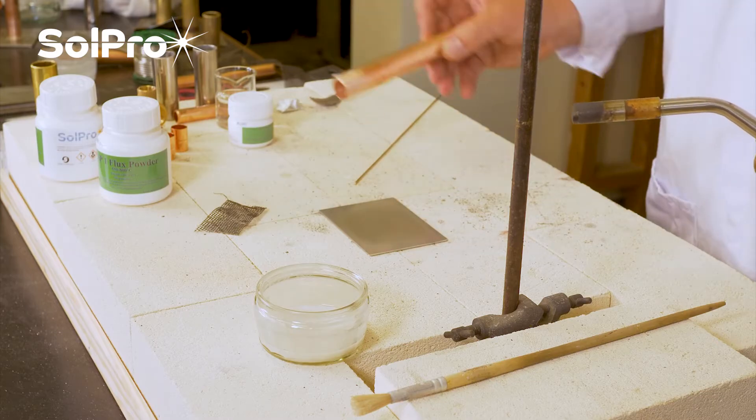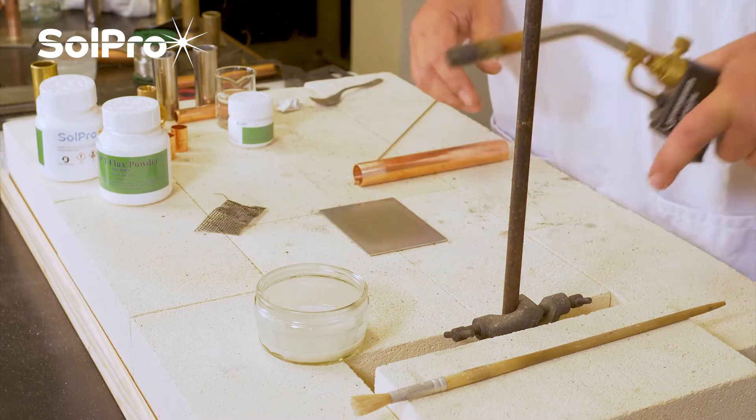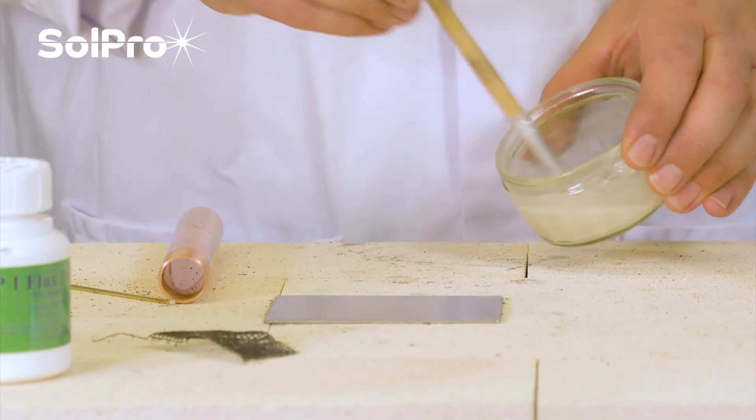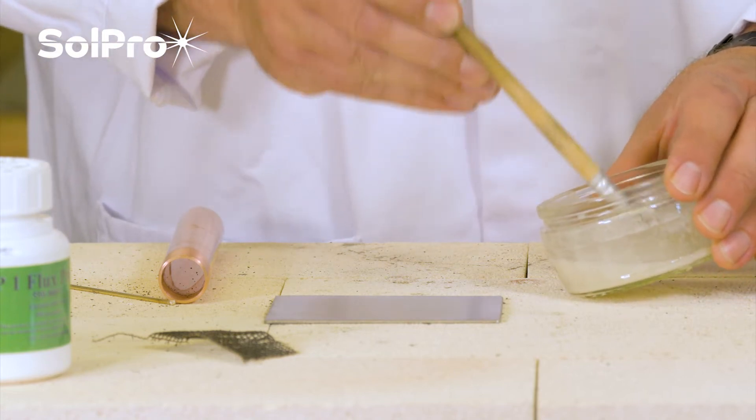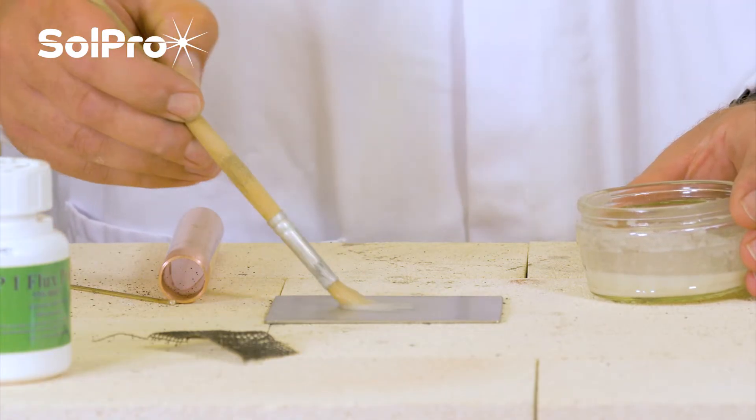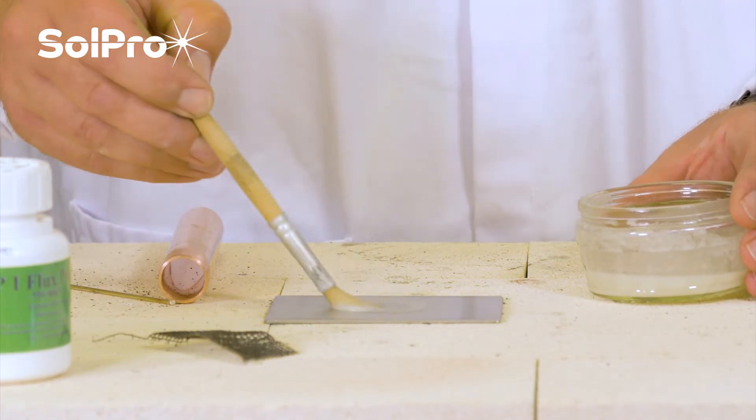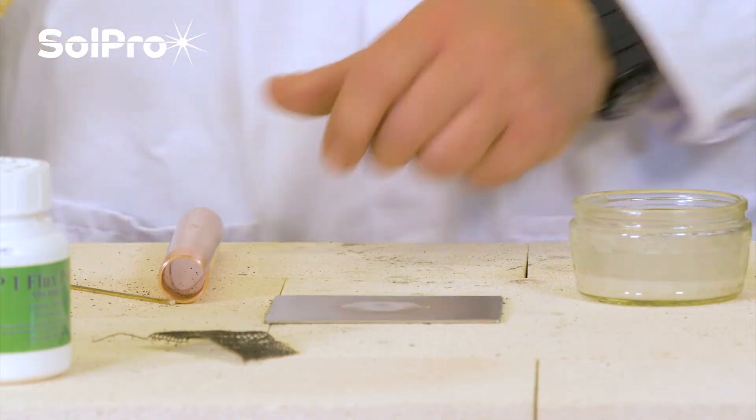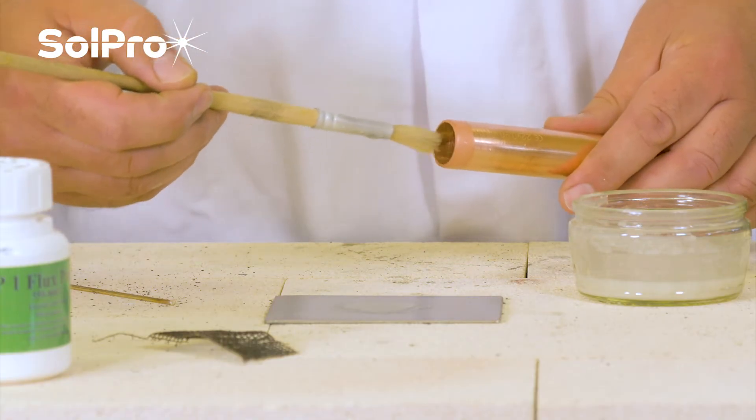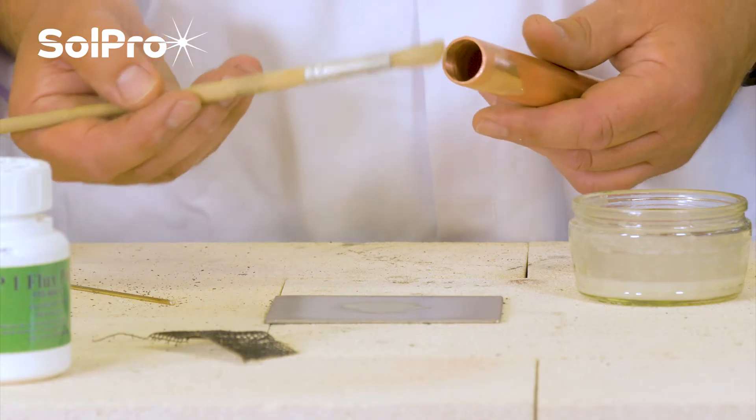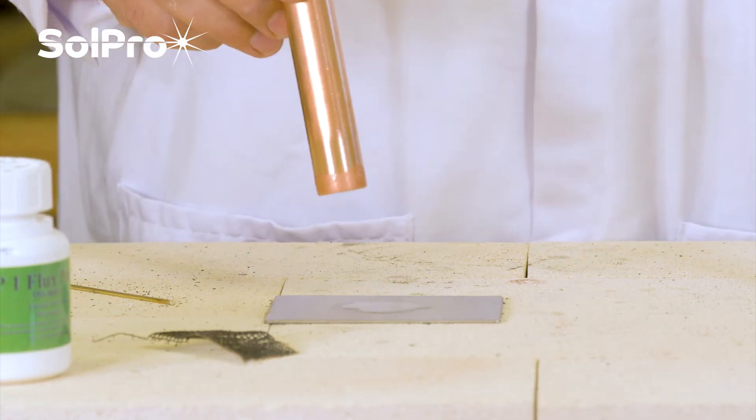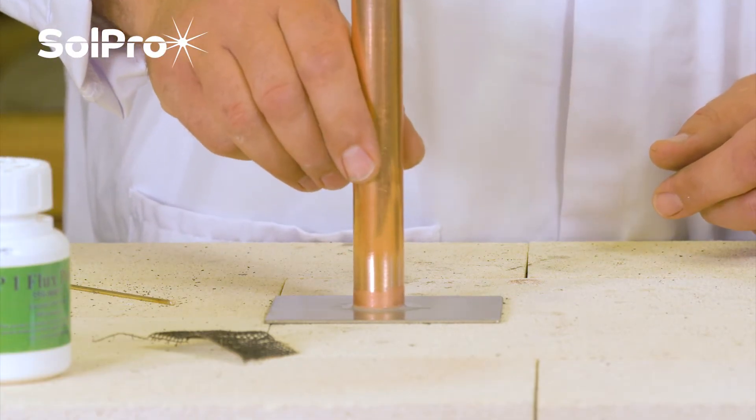First things first is to apply some flux. We've made up a nice creamy paste of the flux. We're going to just paint that on in a simple circle in the middle where we want it to go and create a blob. Again, the outside here of the copper, a little bit on the inside, and just make sure there's some on the end which is where the joint's going to be made.